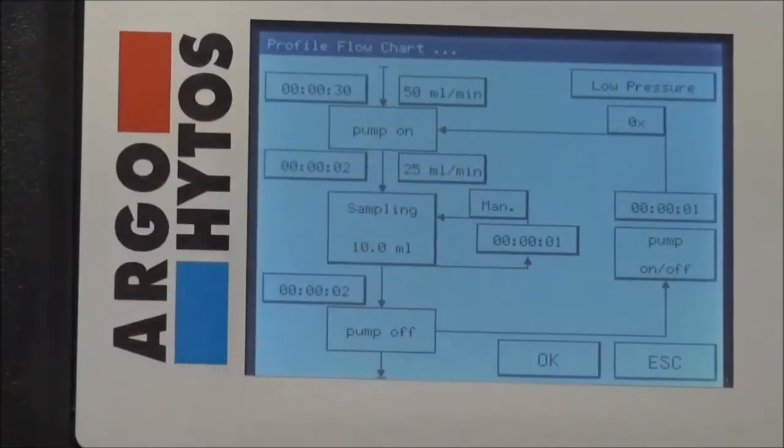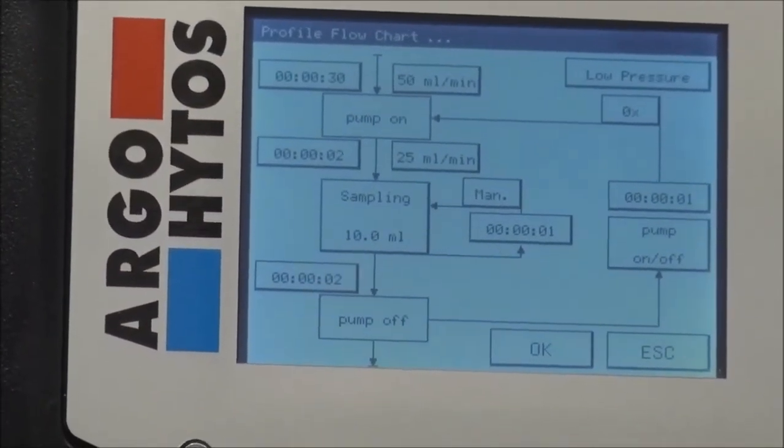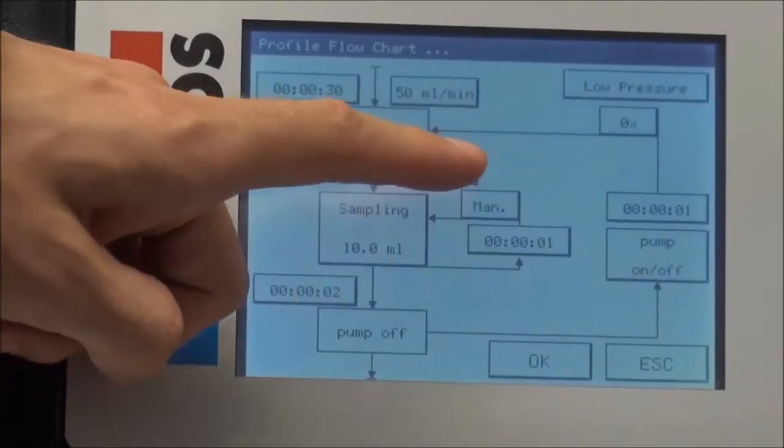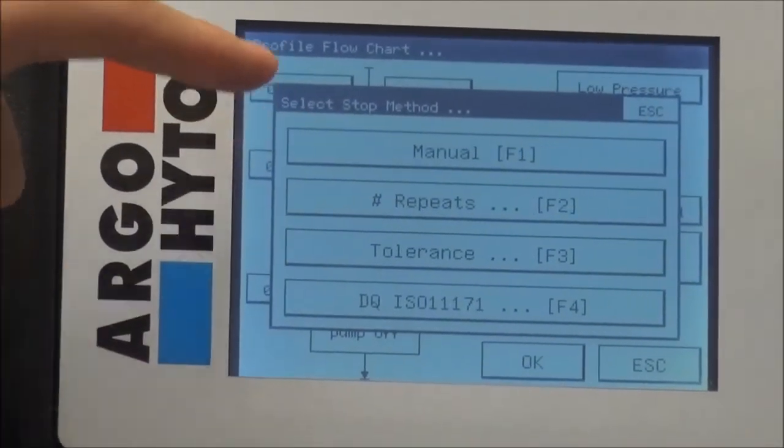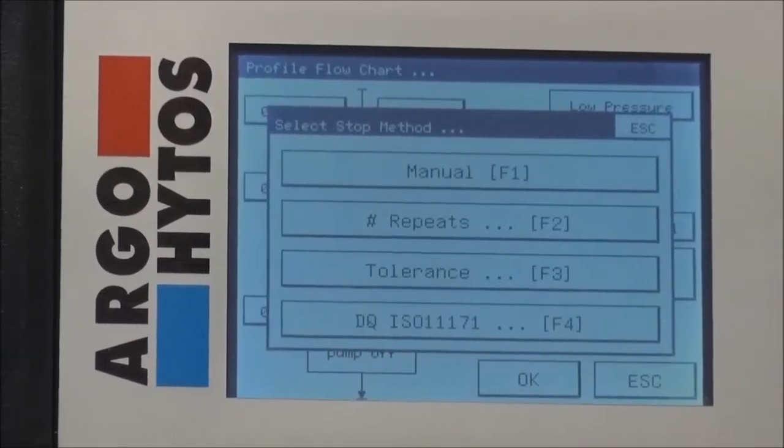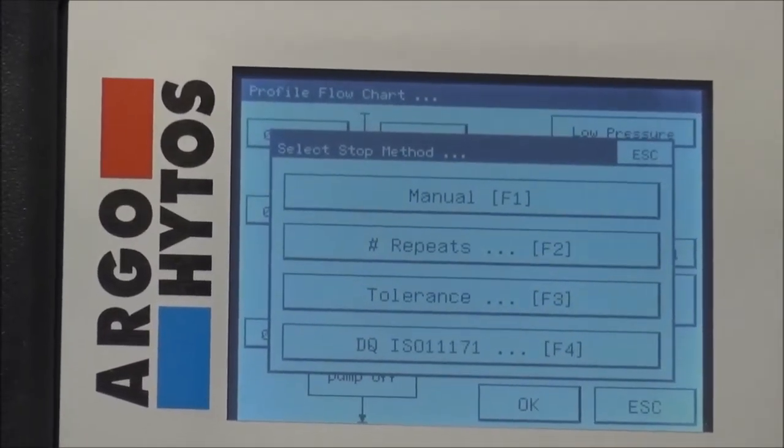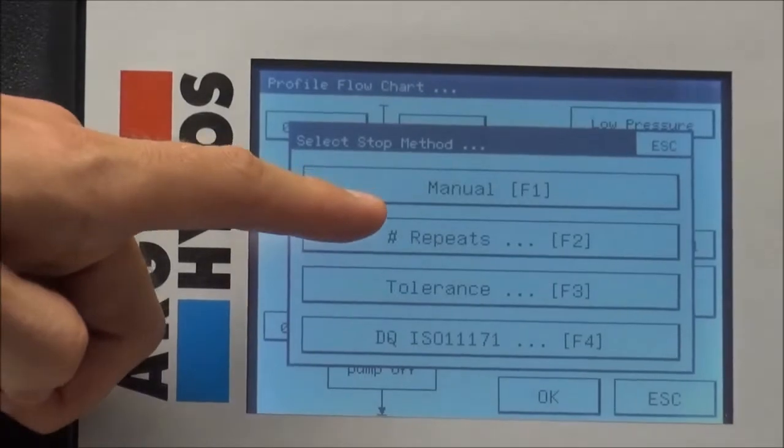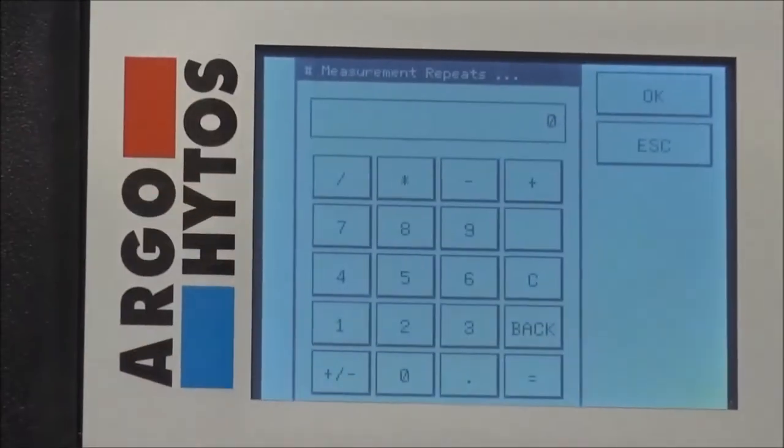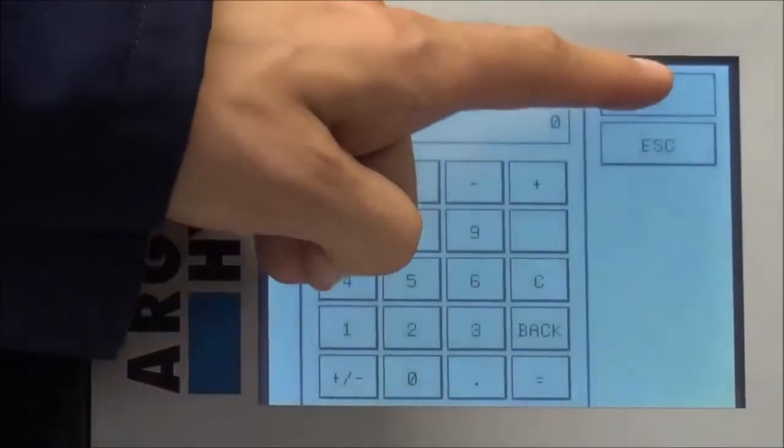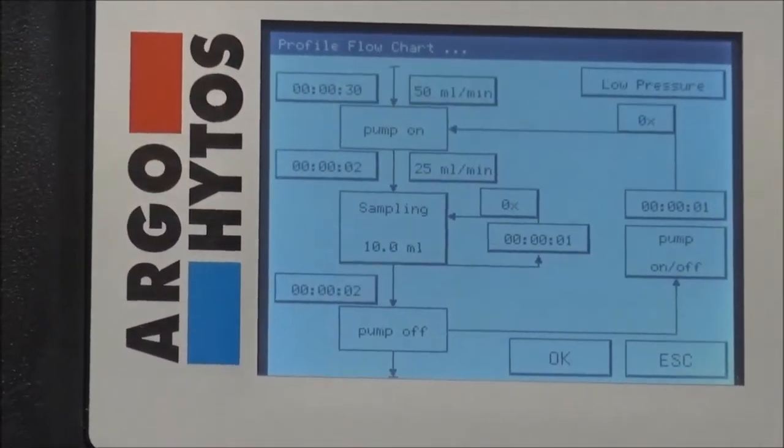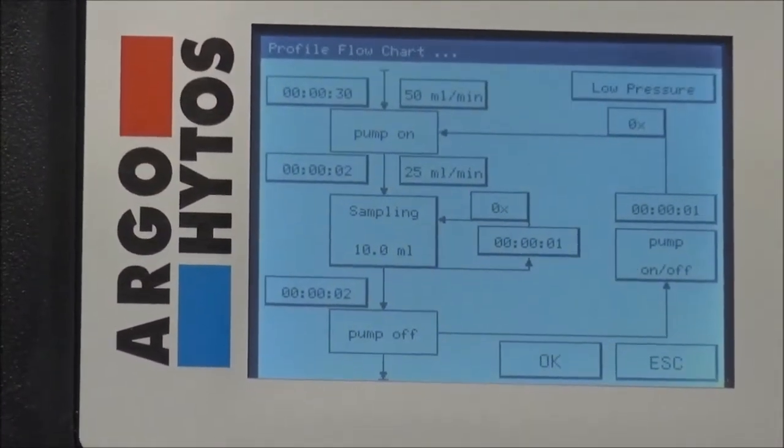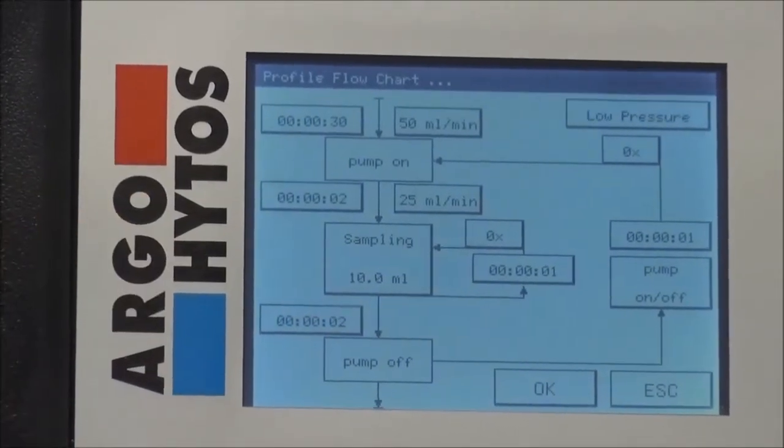Between these you also can select the pause time to have an easy demonstration. In our case we change from the option manual. Manual would be repeat the measurements until you press button to stop. And we want to select repeats and that would select zero. So now there will be only one time a 10 milliliter measurement sample performed by the unit and then afterwards the unit will stop.